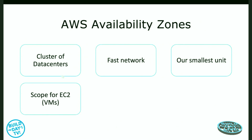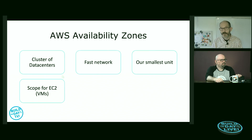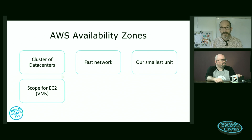Availability zone is the scope for some services. When you define an object, it determines how far it can move and where it exists. Services like EC2, the virtual machine service, are scoped at an availability zone. A single virtual machine lives inside a single availability zone. If that availability zone fails, that particular virtual machine is unavailable.